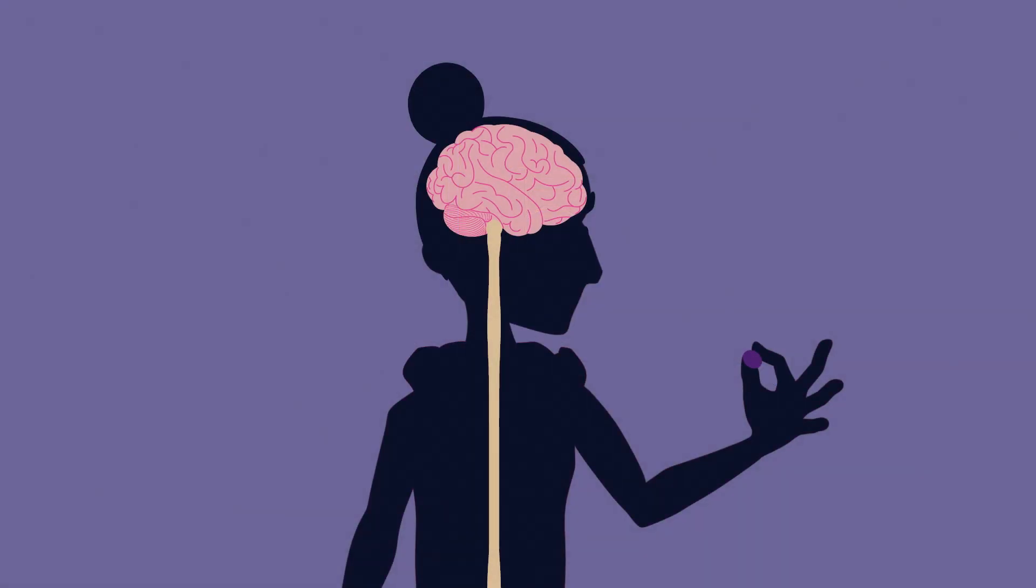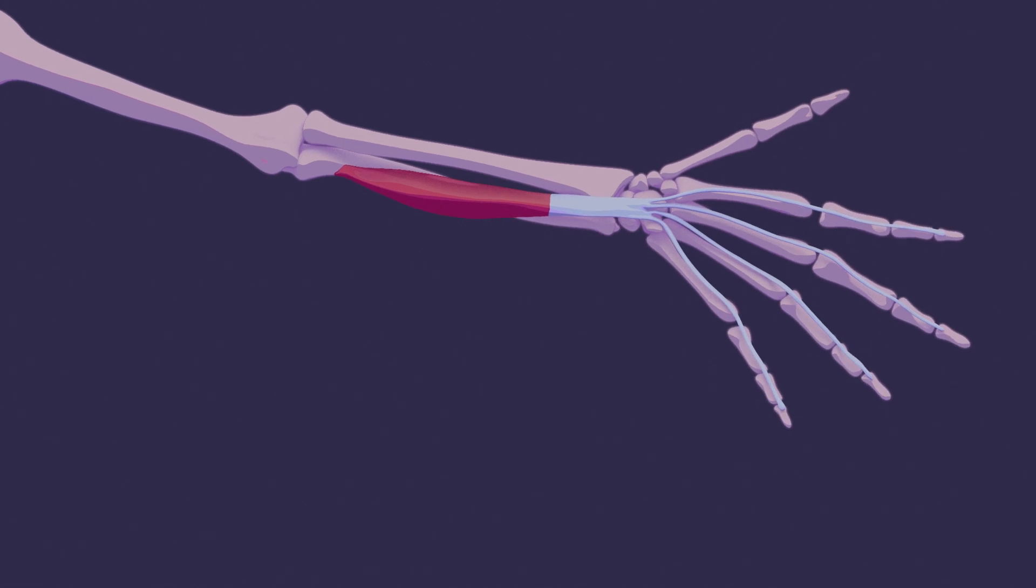We have looked at how the brain sends messages through the spinal cord to nerves connected to your muscles, and how tendons connect your muscles to your bones.